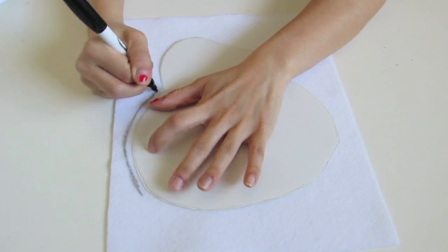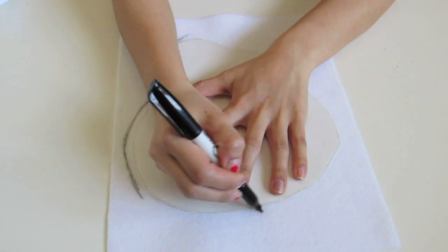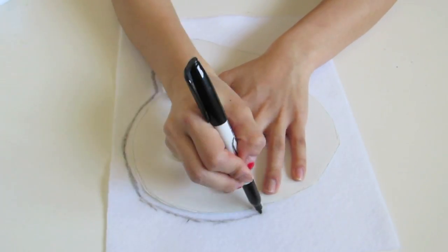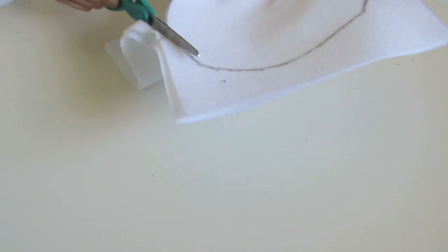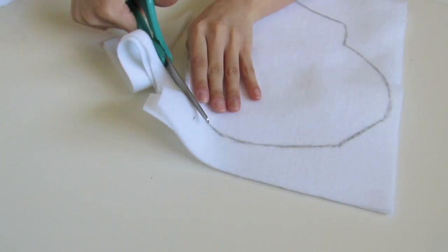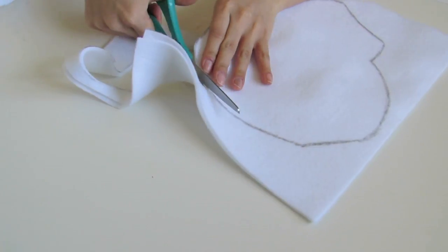And here I'm just doing the body. I would suggest doing the body connected with the feet. That will make your life a lot easier. So keep that in mind. And here I'm just cutting. And again, I overlapped two pieces because you'll need two pieces of the body as well.